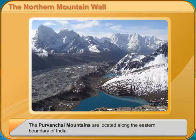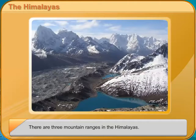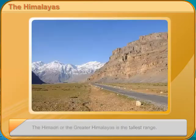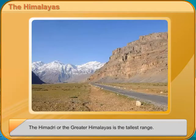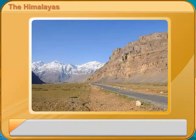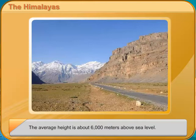The Himalayas. There are three mountain ranges in the Himalayas. The Himadri, or the Greater Himalayas, is the tallest range. The average height is about 6000 meters above sea level. Mount Everest, the highest peak, is in this range.